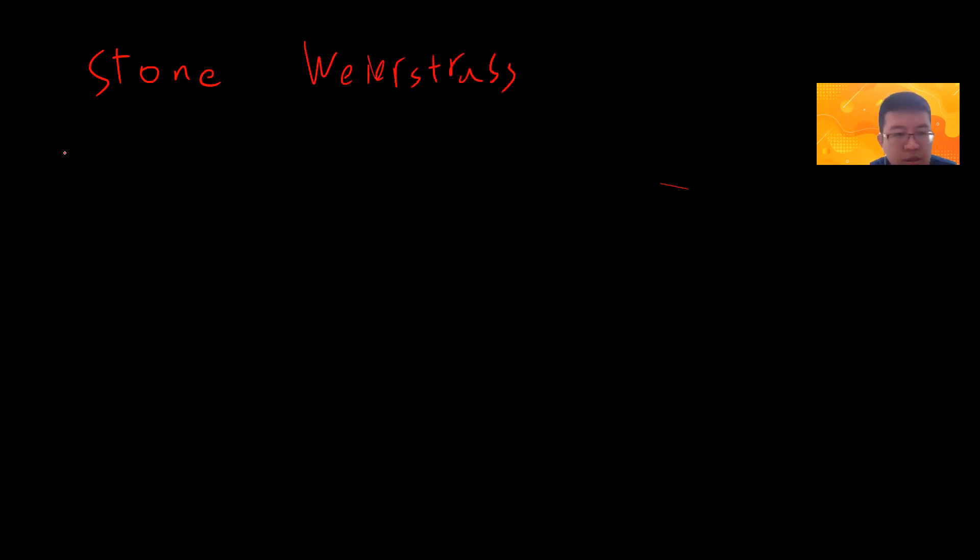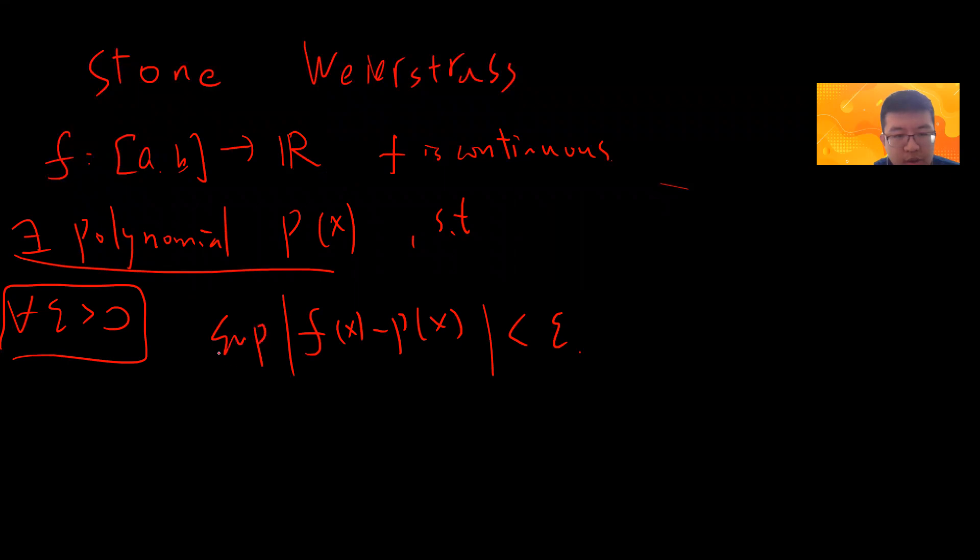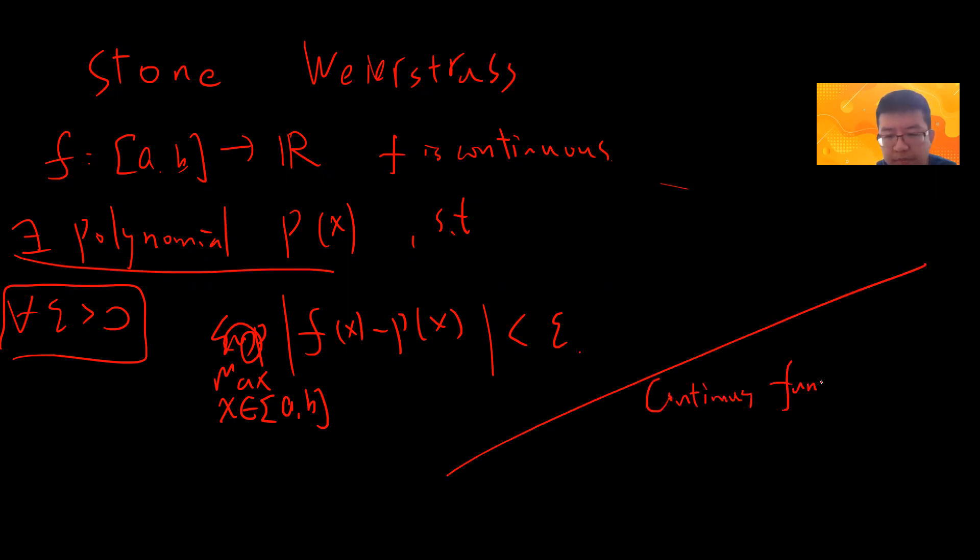This is the simple version. Suppose f is a polynomial defined on a closed interval [a,b] to R and f is continuous. Then there exists a polynomial p(x) such that for epsilon greater than zero, there is a polynomial p(x) where the sup of |f(x) - p(x)| for x in [a,b] is less than epsilon. Basically, continuous functions on [a,b] can be approximated by polynomials. This is the famous Stone-Weierstrass theorem.